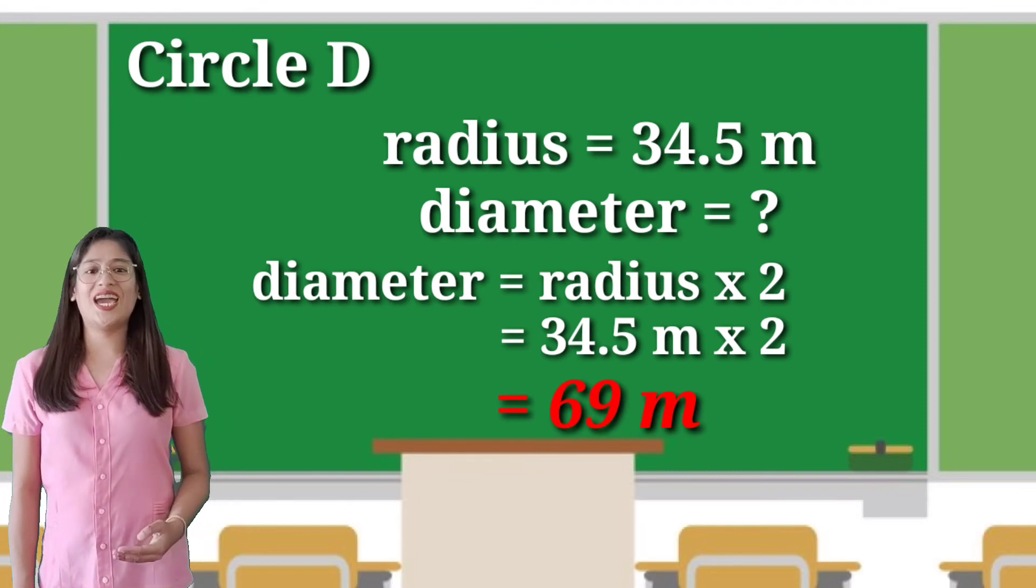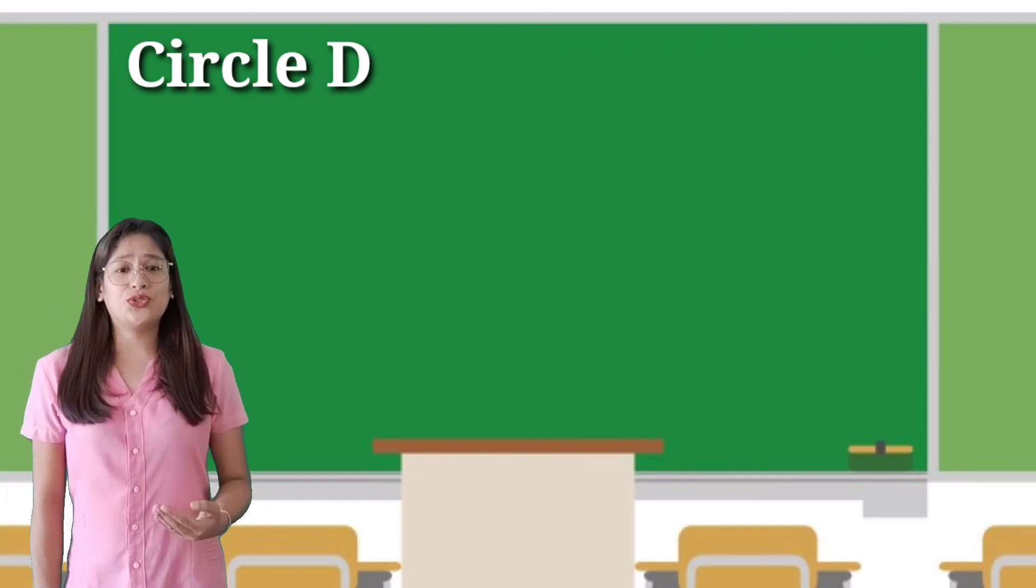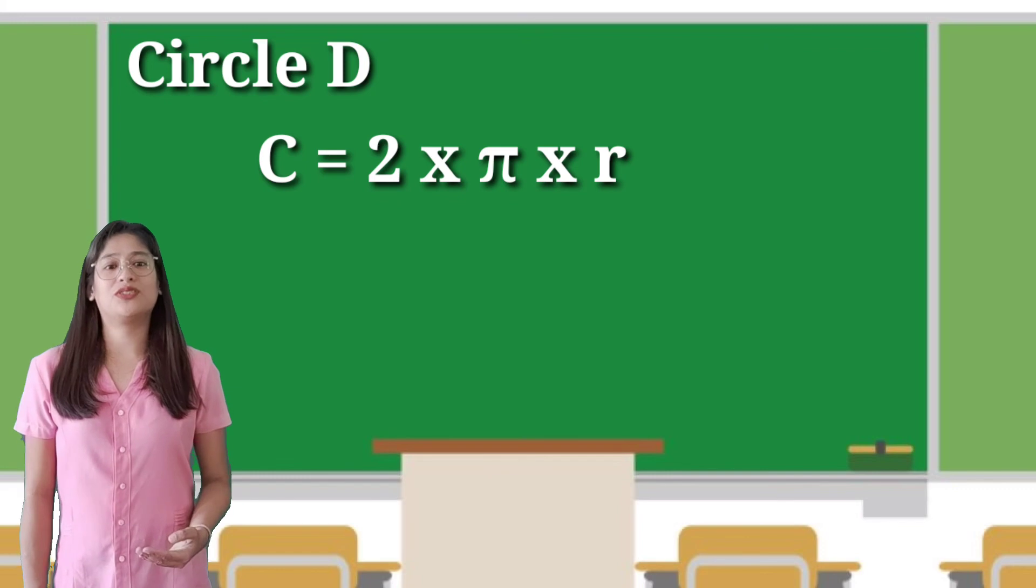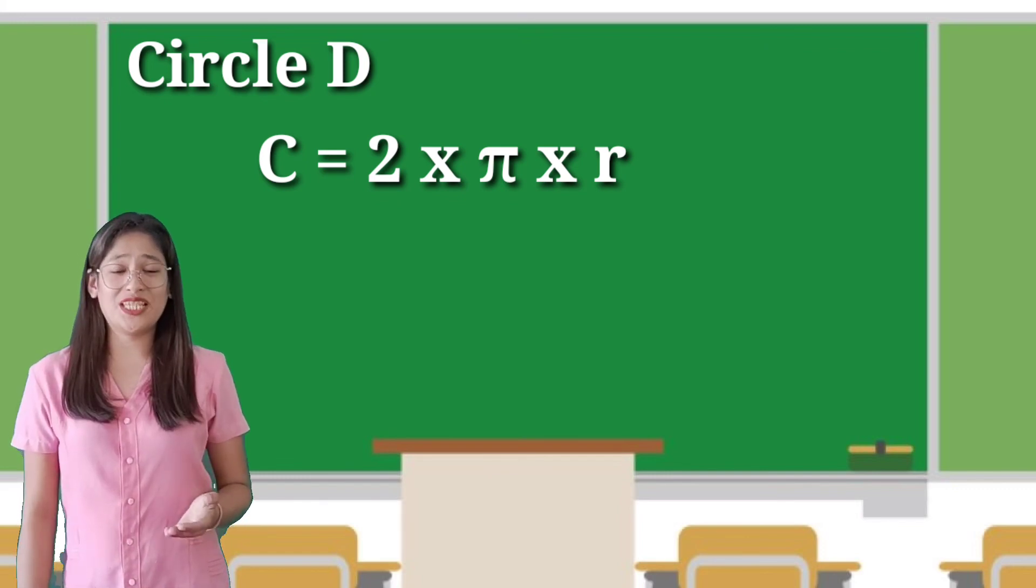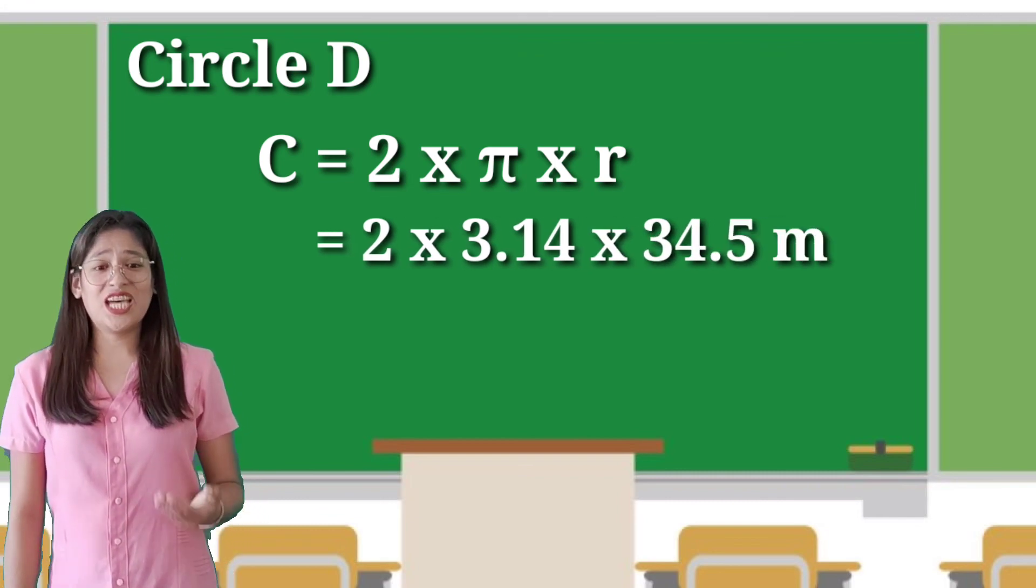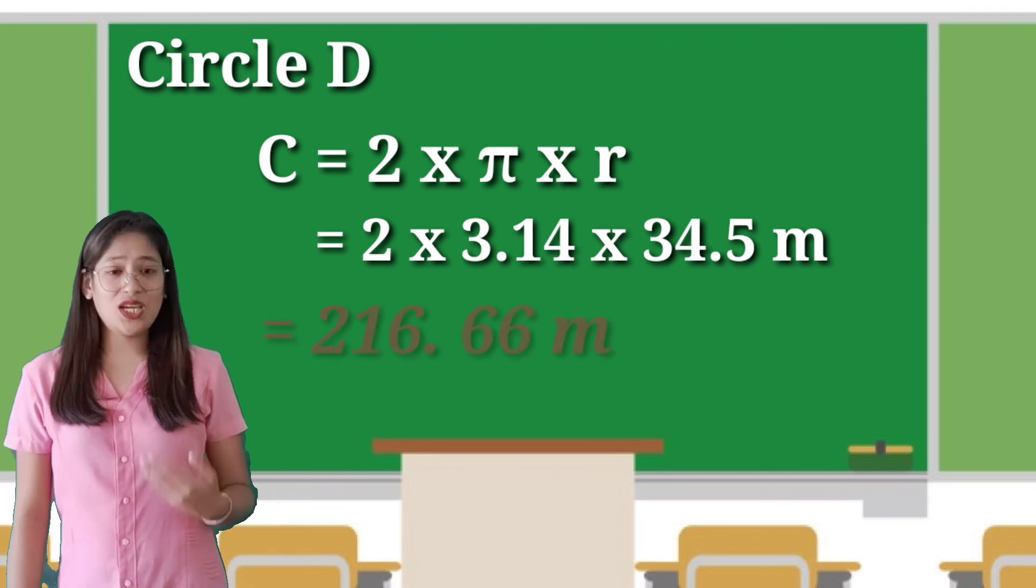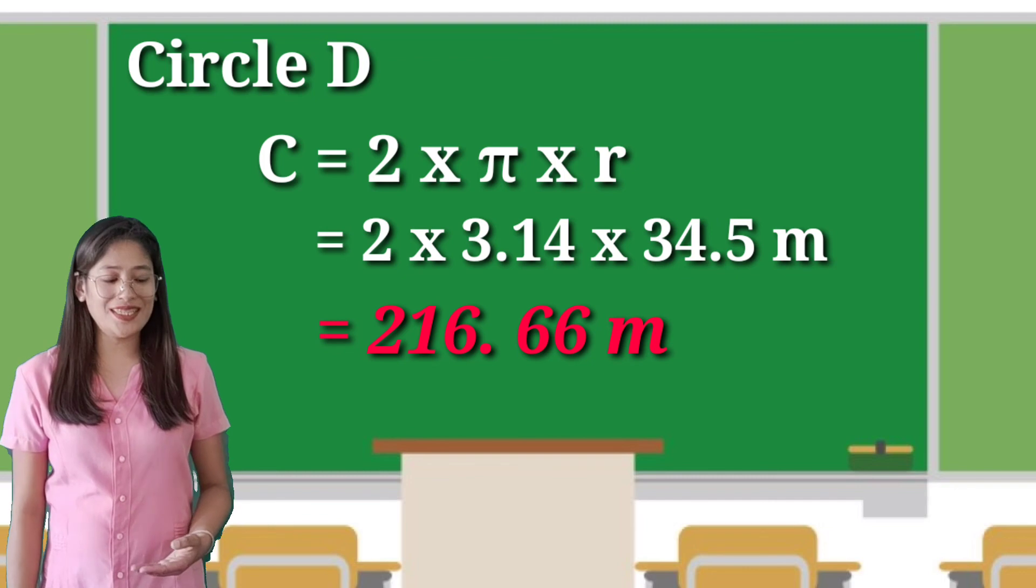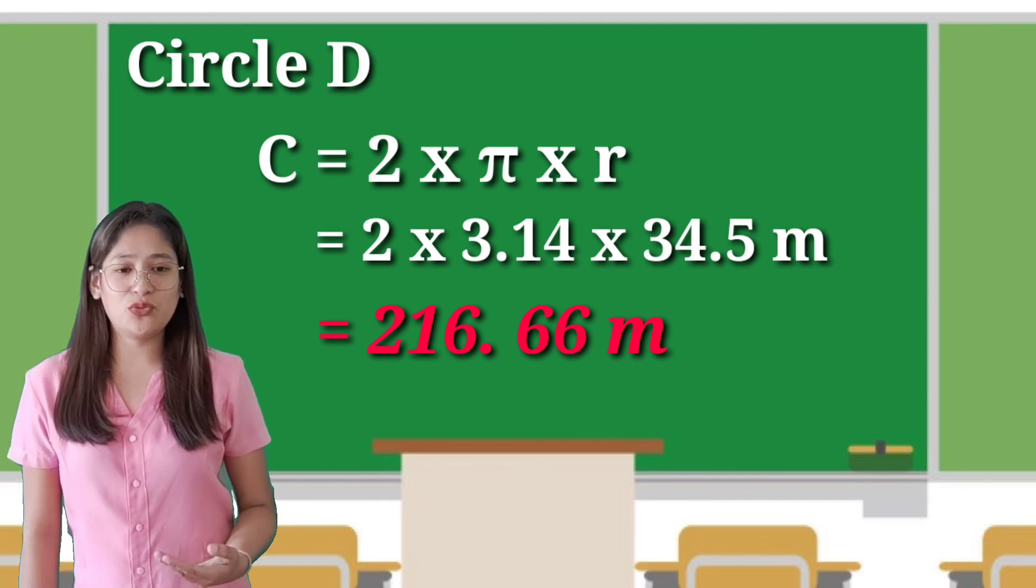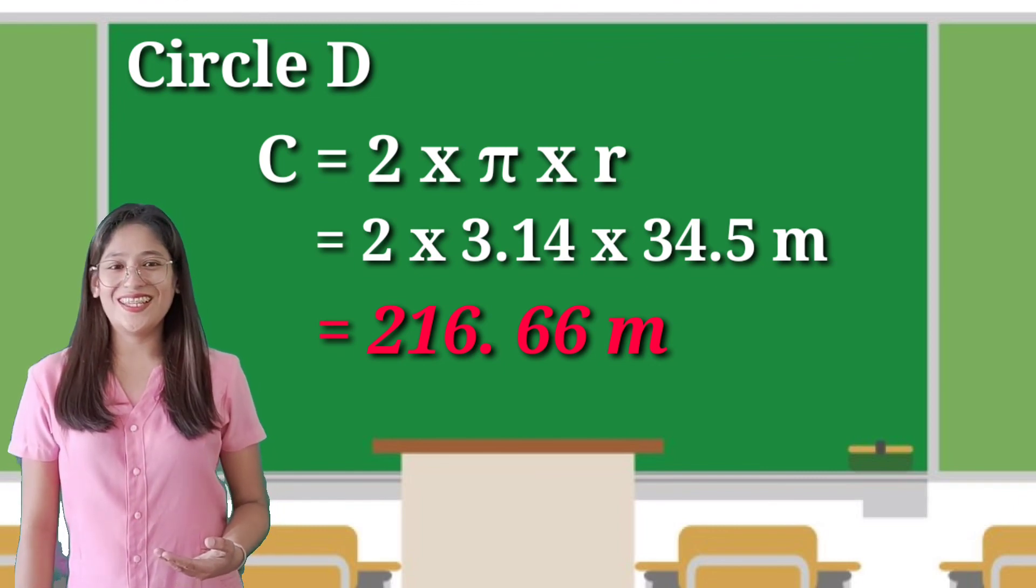To get the circumference, we will use the formula: circumference equals 2 times pi times r, because the radius is given. 2 times 3.14 times 34.5 meters equals 216.66 meters. Don't forget the unit, which is meters. Did you get it? Very good.